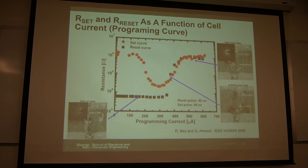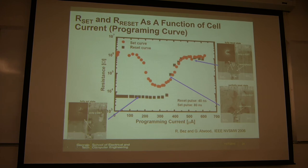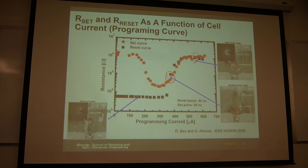TEM images show the different states and their different resistances, which correspond to the volume of the amorphous region. Comparing two states: one has larger resistance with a larger amorphous region visible under the microscope, while another data point shows only a small amorphous region. You can tune the volume of the amorphous region by controlling the programming current, giving different resistance levels — this indicates you can use this method for multi-level cell storage.